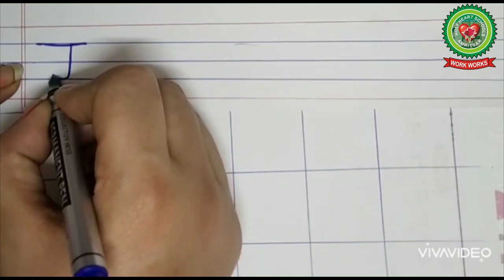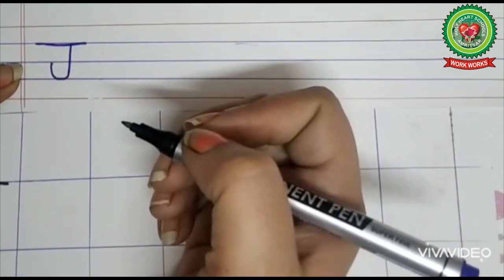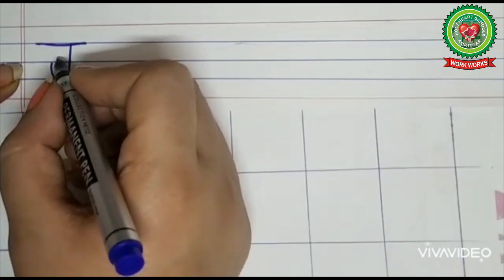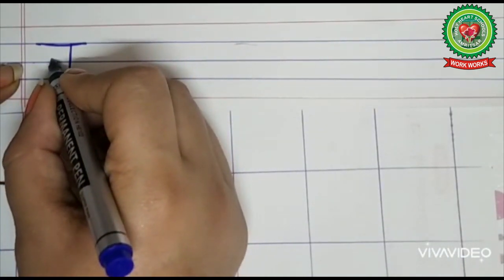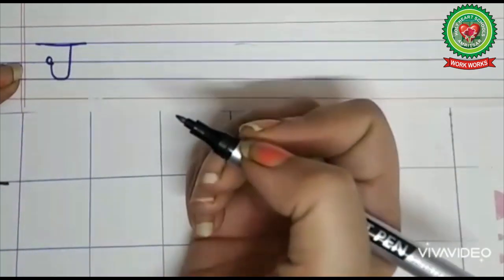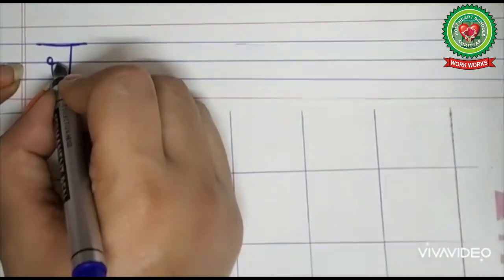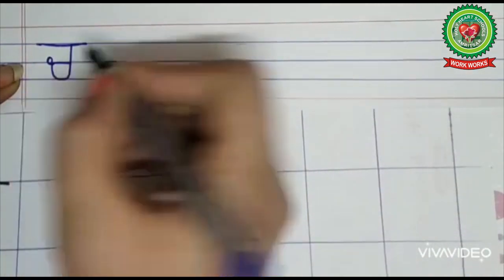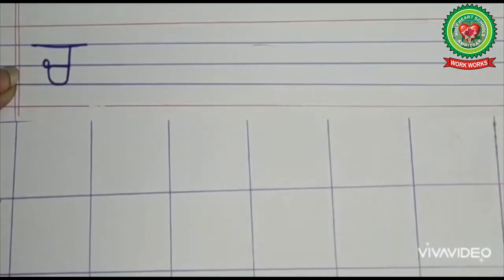From there we will take a curve like this, and from there we will round up the curve like this. Then we will draw a small sleeping line. This is Chacha. For practicing Chacha on copy, you must take a square line copy.